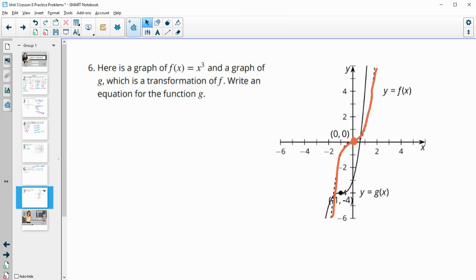We can take a look here. We're going from, they labeled these ordered pairs, zero zero is going to move to the point negative 1 negative 4.